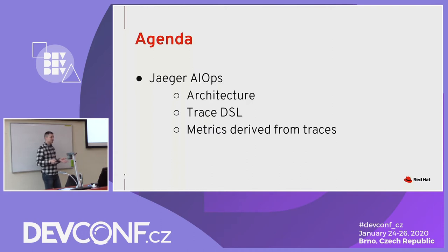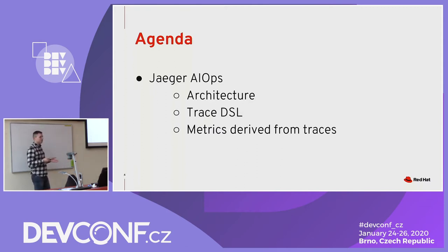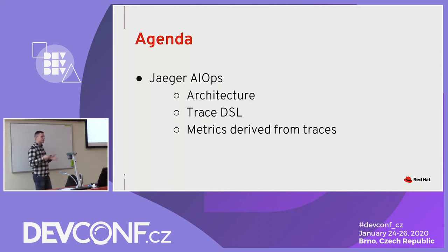On today's agenda, I will talk about how we approach this problem in Jaeger — what kind of architecture allows us to do these things, something about a trace domain-specific language to make it easy for developers to aggregate traces and extract features, and finally what kind of metrics we were able to derive from traces so far. No AI, I'm sorry.